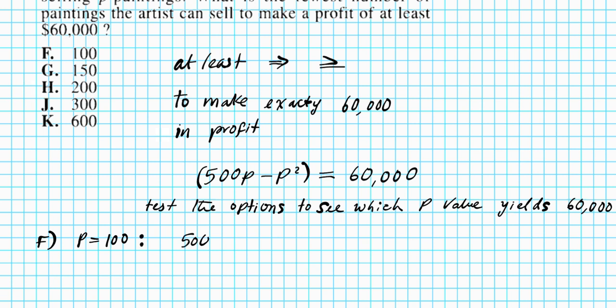We're going to do 500, instead of p we put 100, minus 100 squared. And then you can just simply put this in a calculator. You end up with 40,000. Is that what we want? 40,000 is not equal to 60,000. So this option F is a fail. That's not what we want.